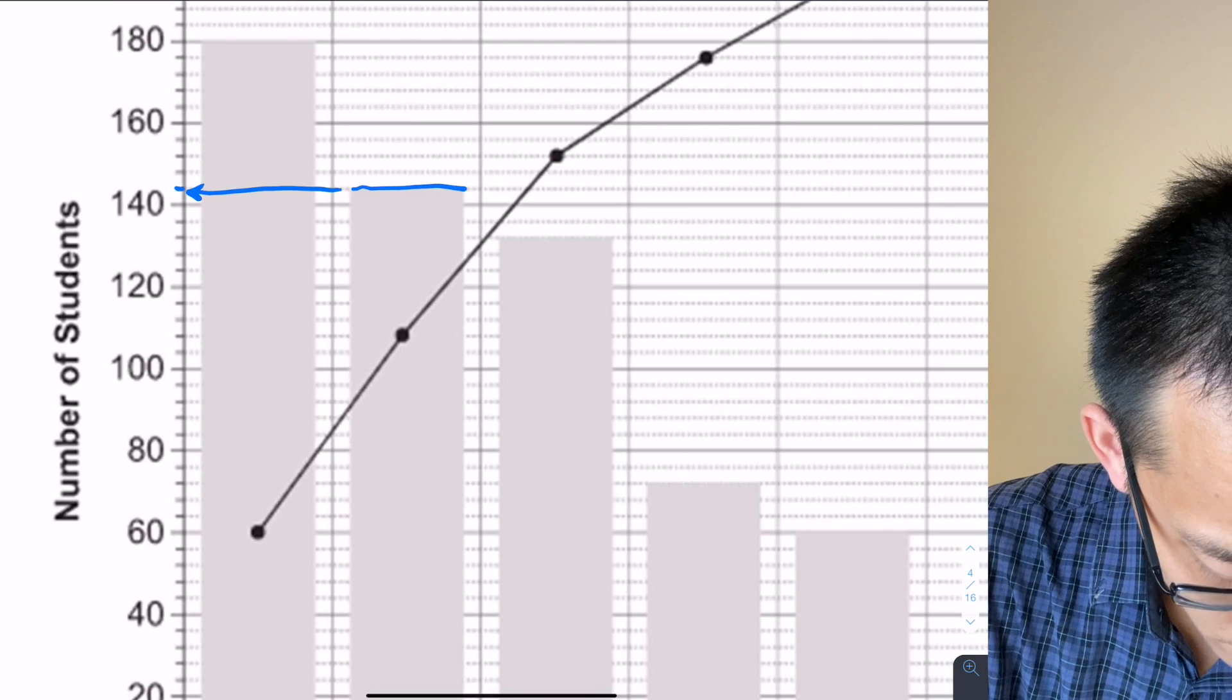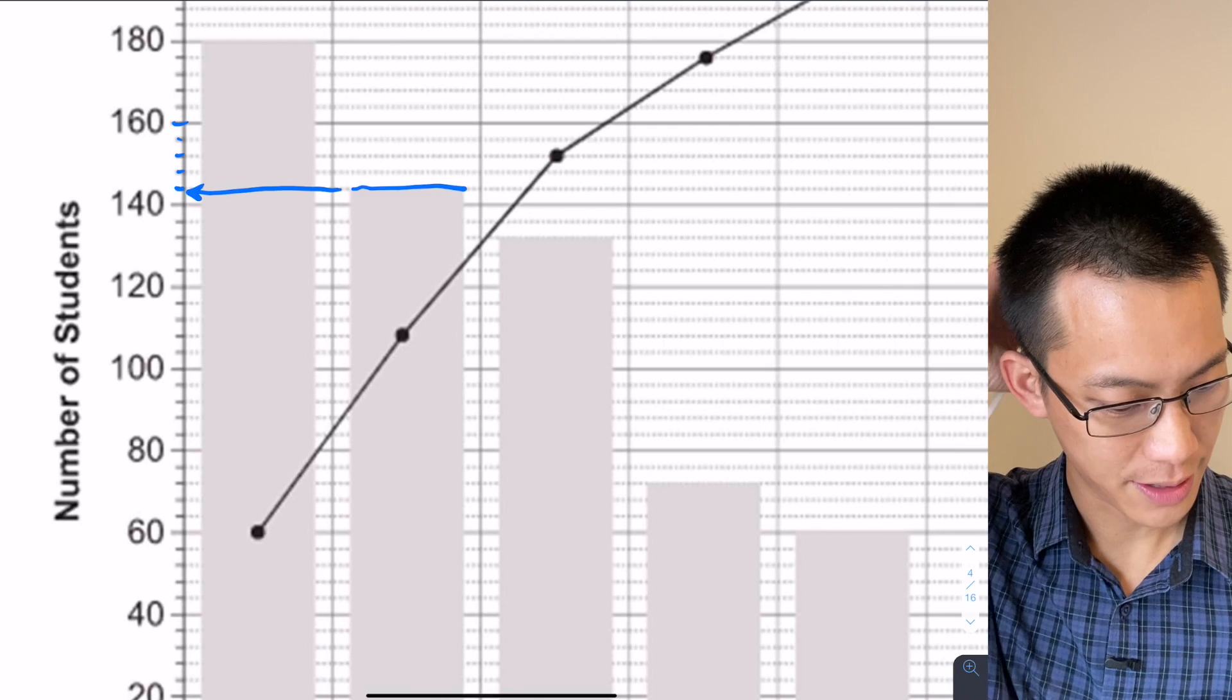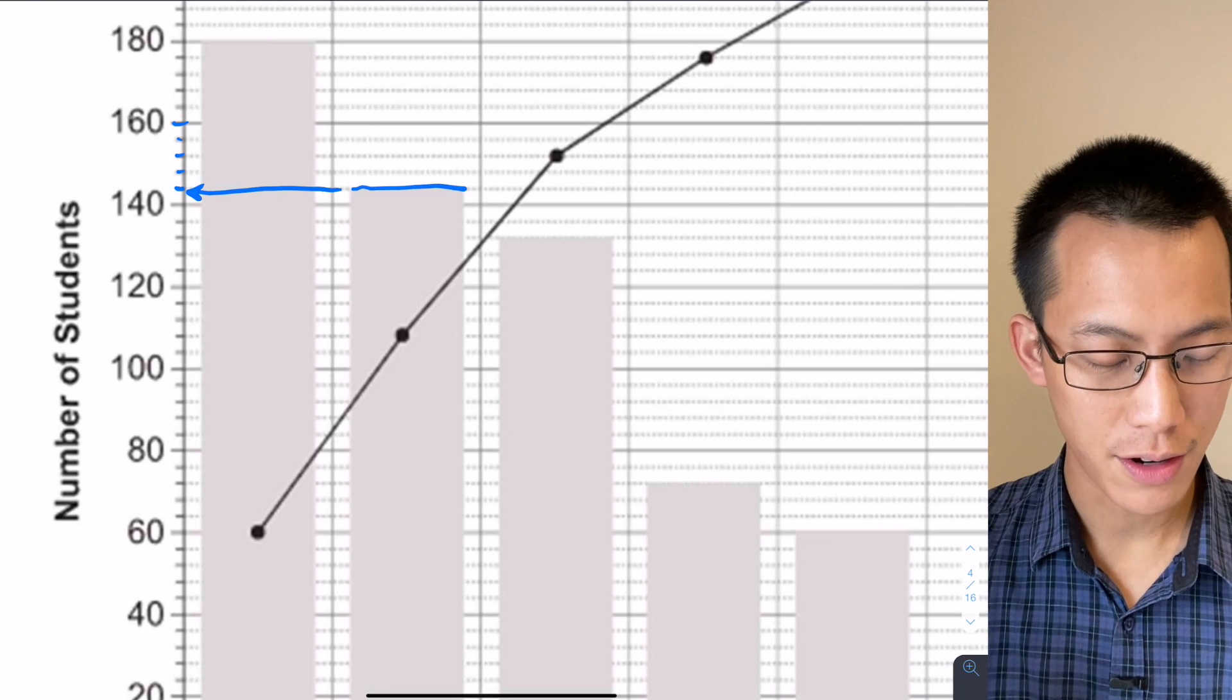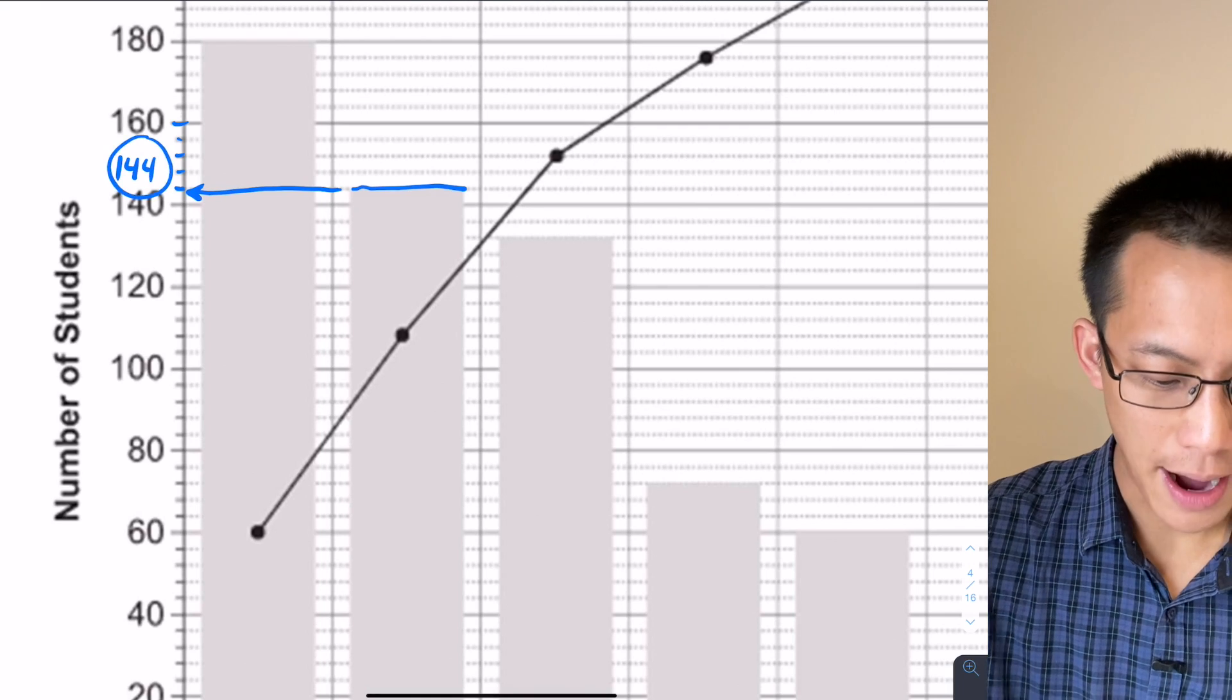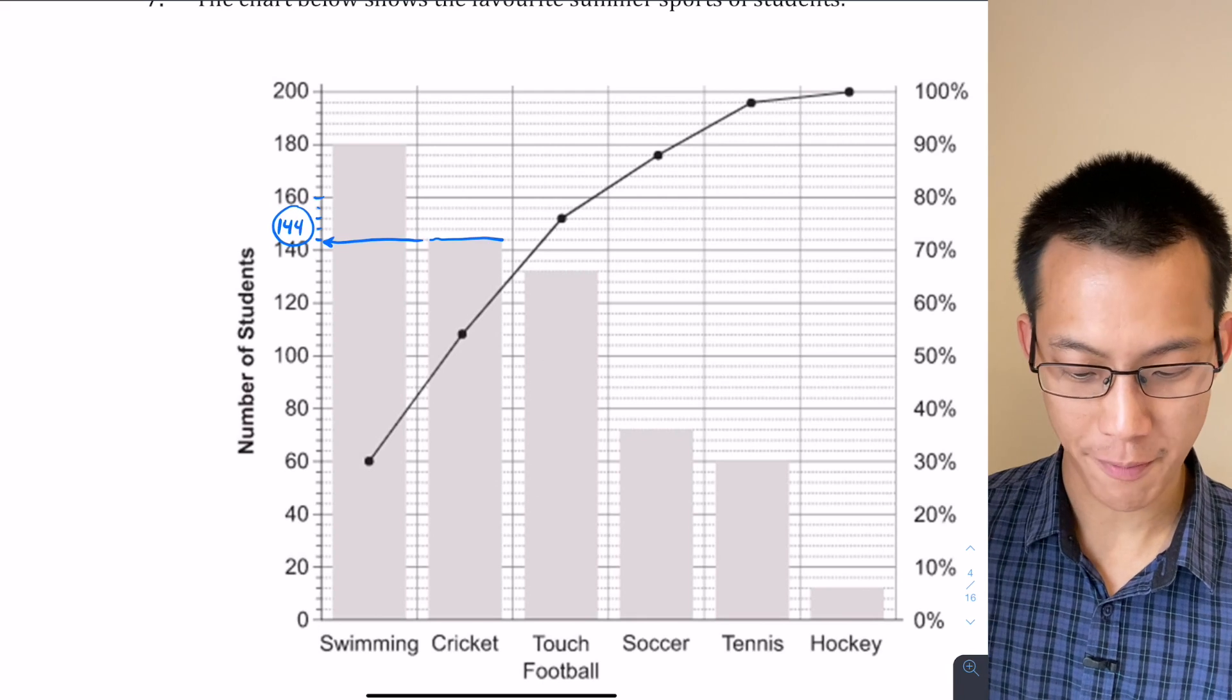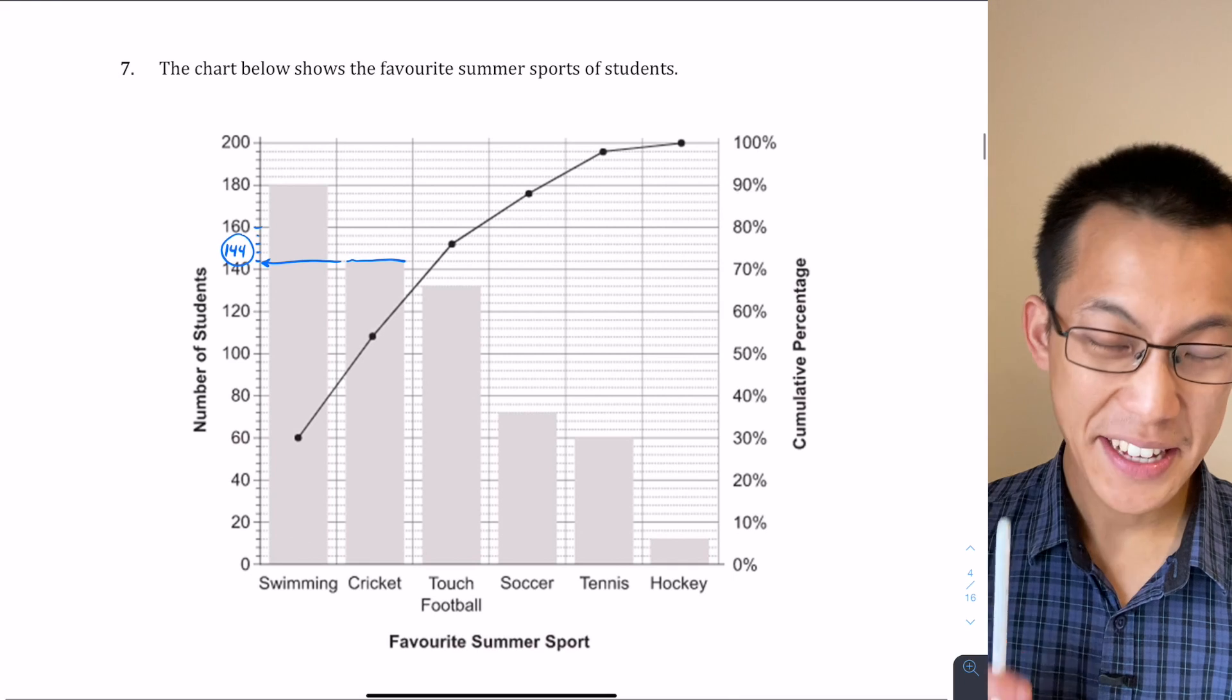So that makes them each four. So it goes 140, 144, 148, 152, and so on. So this is the 144 mark. So you could say, oh, there's 144 people out of the total number of people who have given the results for their favorite sport.